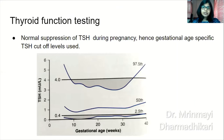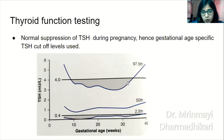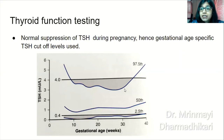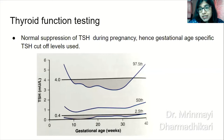Now, thyroid function testing and the reference range required in pregnancy. There is a normal suppression of TSH during pregnancy. In these patients, if we use the non-pregnant TSH reference range of 0.4 to 4, pregnant women who are actually hypothyroid will miss their diagnosis — 30% of them will be falsely diagnosed as euthyroid. Conversely, women who are actually euthyroid will be misdiagnosed as subclinical hyperthyroidism because of TSH suppression during pregnancy.